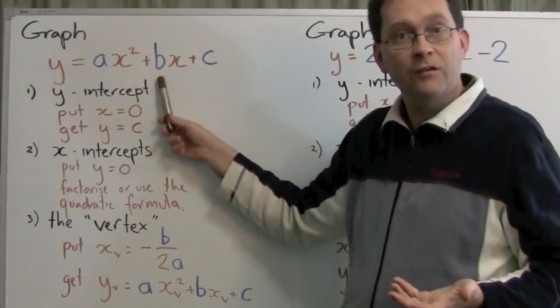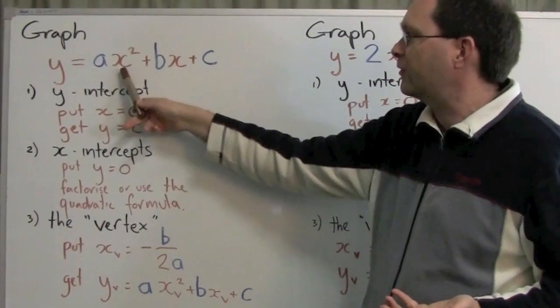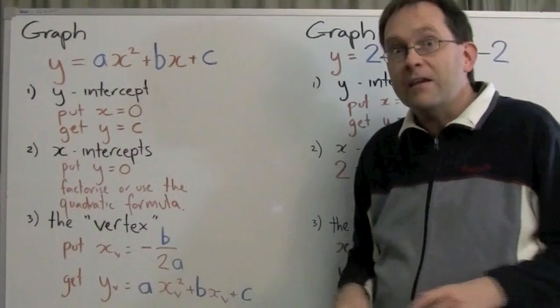The y-intercept is very easy to find. You just put x equals 0, and that gives you y equals c. So that's very easy.